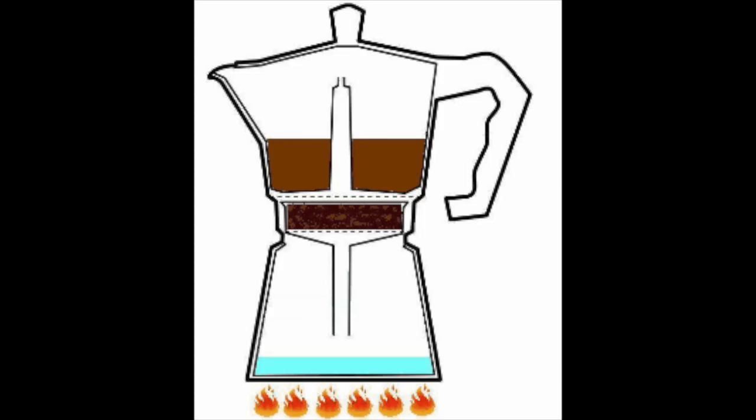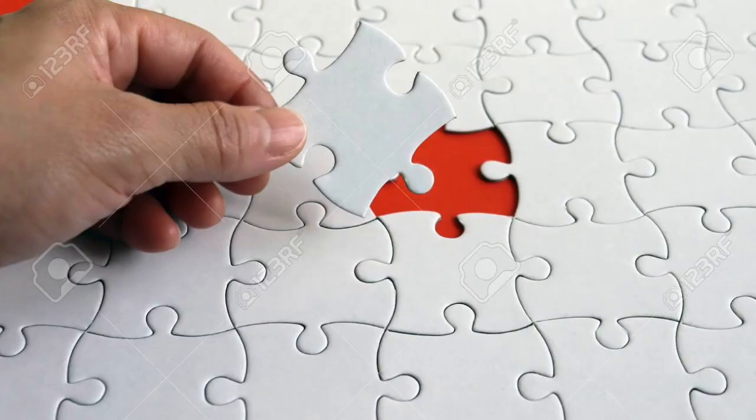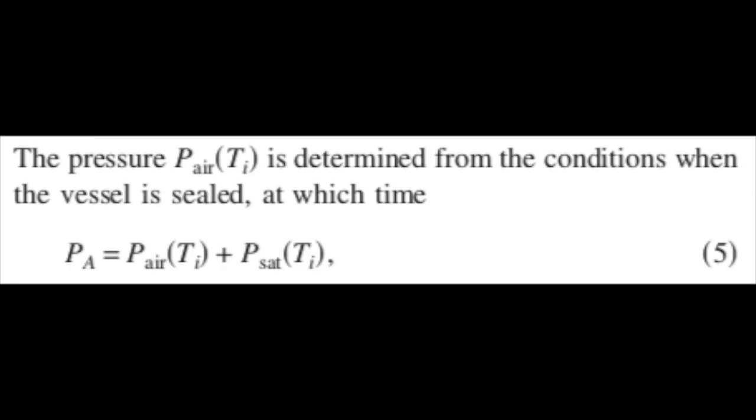On top of this, King adds another critical piece to the model: the pressure in the chamber is not only the vapor pressure of the heated water, but also that of the air that has been sealed with it. This has the paradoxical effect of making the pressure lower. How on earth?